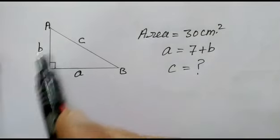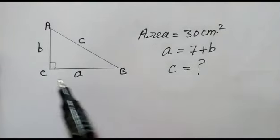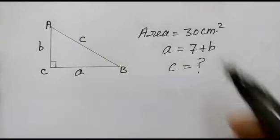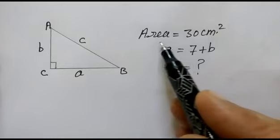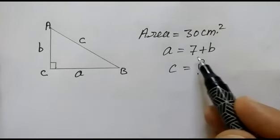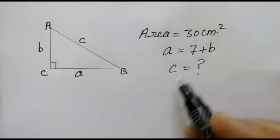Hi friends, today we have a right angle triangle ABC with sides a, b, and c. We're given that the area of the right angle triangle is 30 centimeter square, a equals 7 plus b, and we have to find out the value of c.